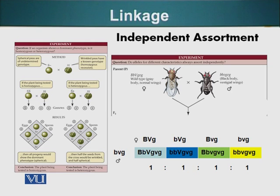We have already seen this — it is also a Punnett square in a way. Small vg and capital V can go with small v from the male, and capital V can go with the small v in this offspring. The other combination is small v, small v, capital V, small v. The third is capital B, small v, and small v. And the fourth, of course, is all small letters — small v with small vg's.